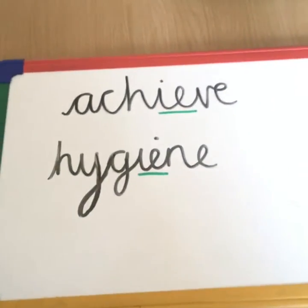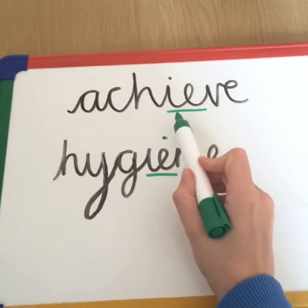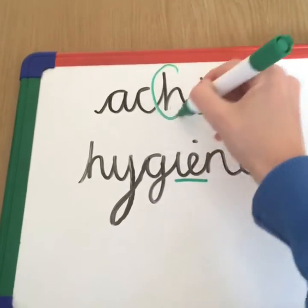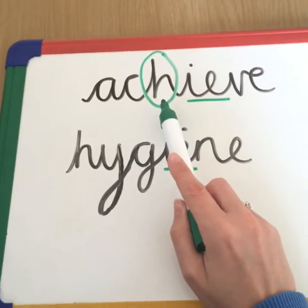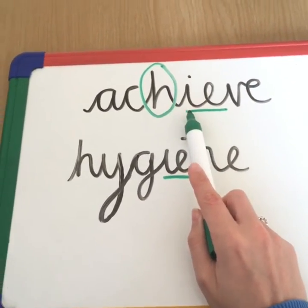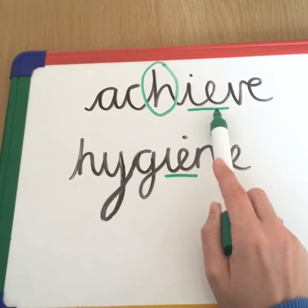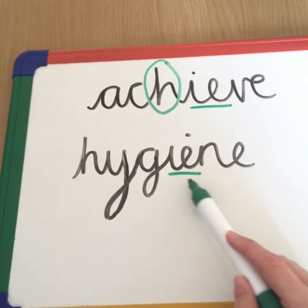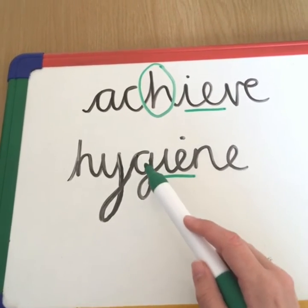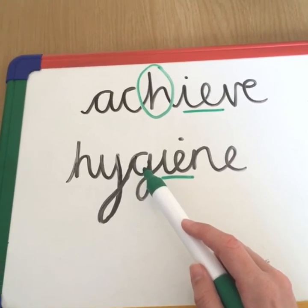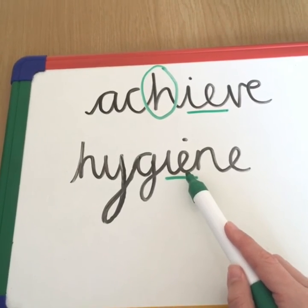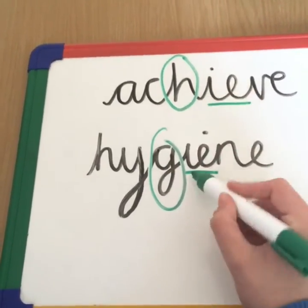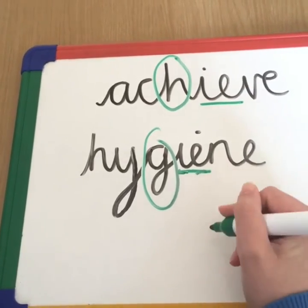With a word like achieve, the E sound comes after an H. Because it comes after an H, it's going to be I before the E. With the word hygiene, the E sound comes after a G, so it's I before E except after C. Well, this isn't a C, it's a G, therefore the I comes before the E.